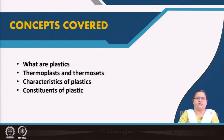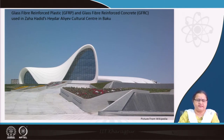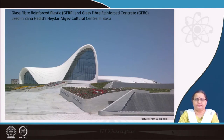Prior to moving there, we will see this huge structure by Zaha Hadid — the Heydar Aliyev Cultural Centre in Baku — which is made of glass fiber reinforced plastic and glass fiber reinforced concrete, a mix of both. This particular shape was possible because of the composite material of GFRP and GFRC.